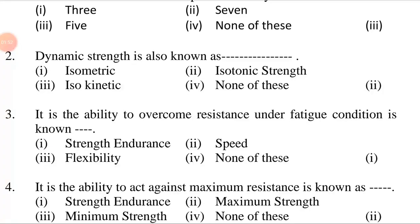Dynamic strength is also known as dash. First option: isometric. Second option: isotonic strength. Third option: isokinetic. Fourth option: none of these. The answer is the second option — isotonic strength. Dynamic strength is also known as isotonic strength.